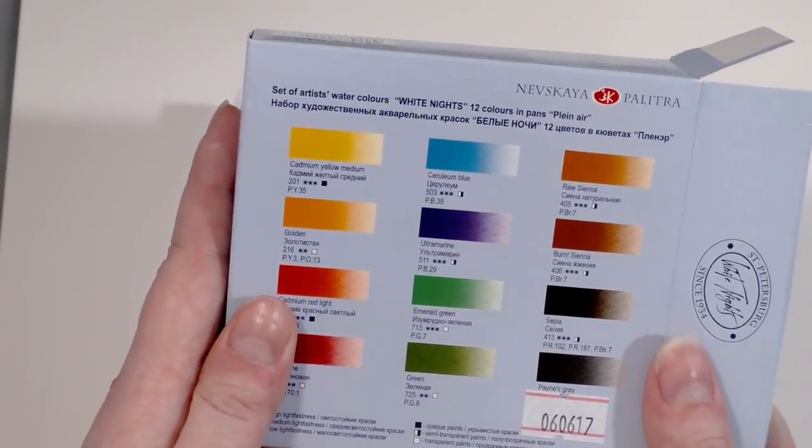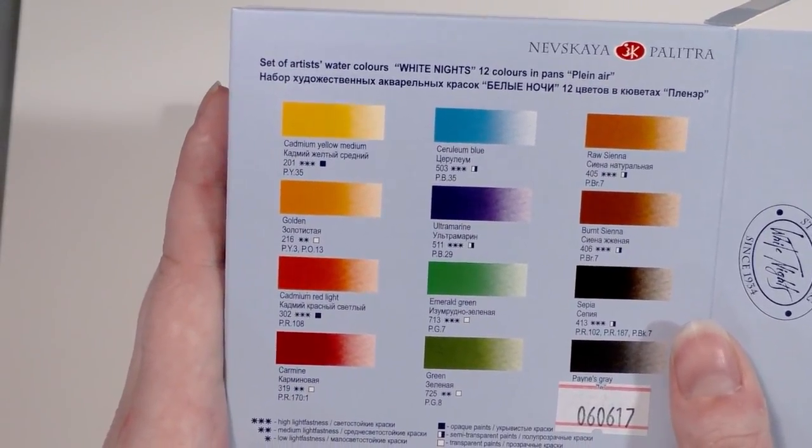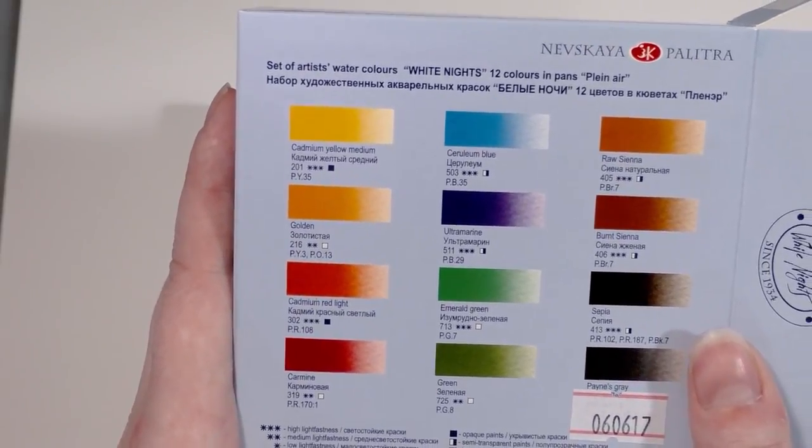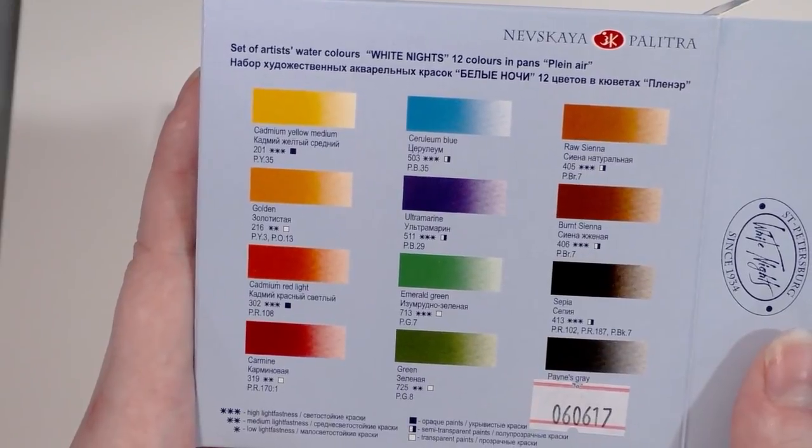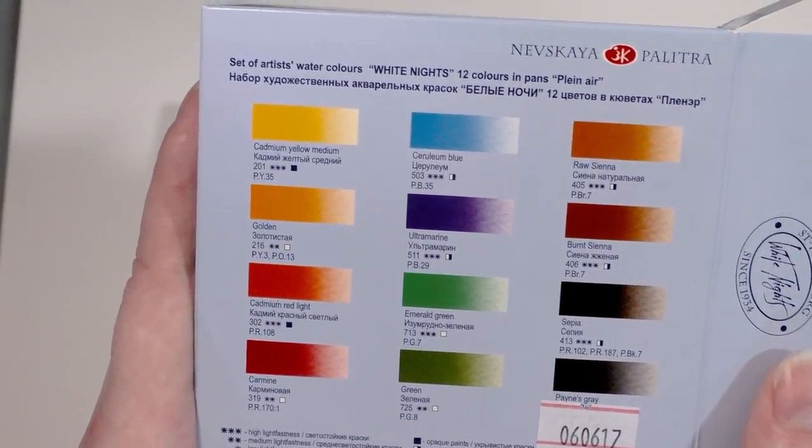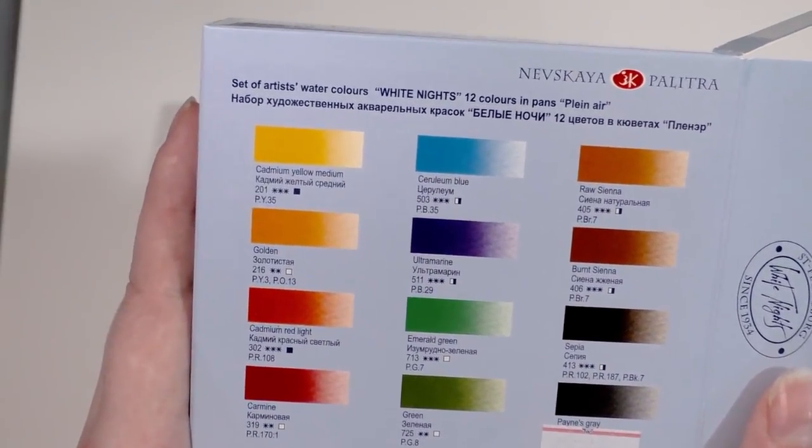Inside this set of White Nights, we get cadmium yellow medium, golden, cadmium red light, carmine, cerulean blue, ultramarine, emerald green, green, raw sienna, burnt sienna, sepia, and Payne's gray.